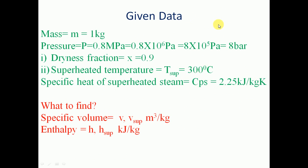First we write the given data. The mass is given as m equal to 1 kg. The pressure is given as p equal to 0.8 MPa, that can be written as 0.8 into 10 raise to 6 Pascal, which is 8 into 10 raise to 5 Pascal, and that can be written as 8 bar, because 1 into 10 raise to 5 Pascal equals 1 bar. We convert the pressure into bar because in the steam tables, pressure-based steam tables require pressure in terms of bar.